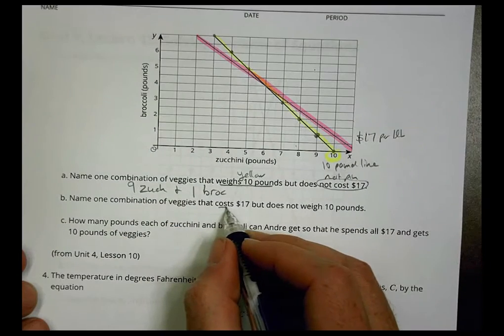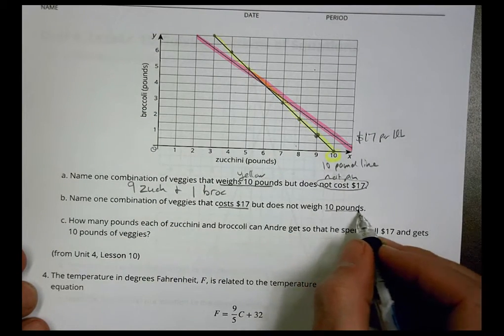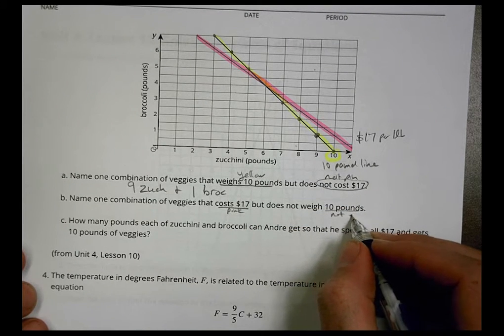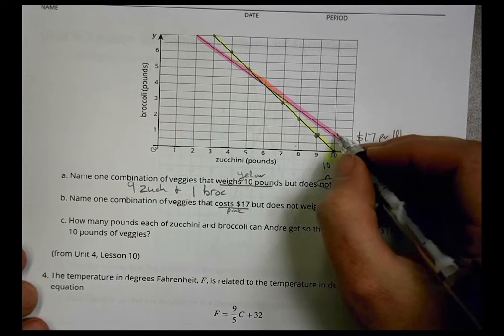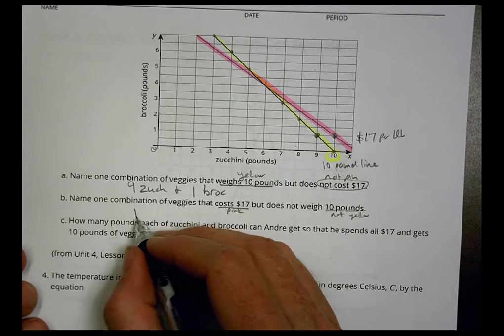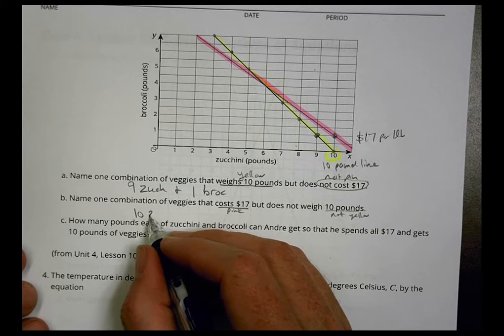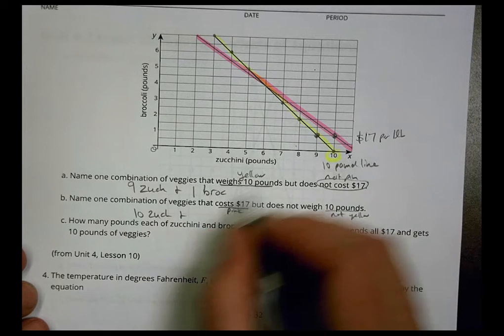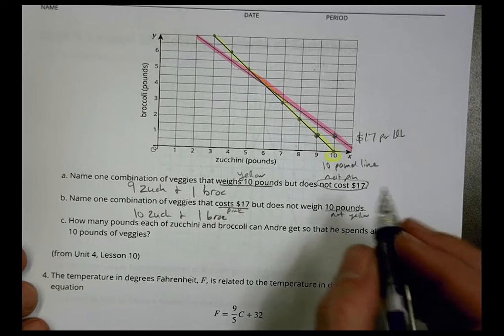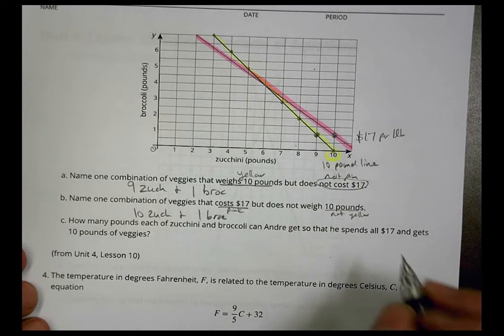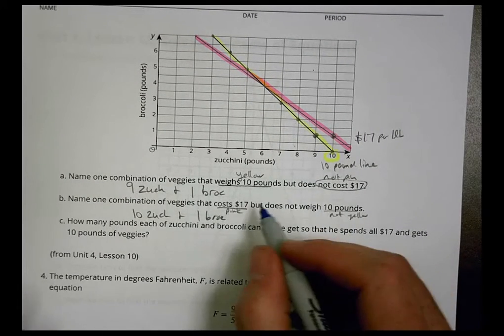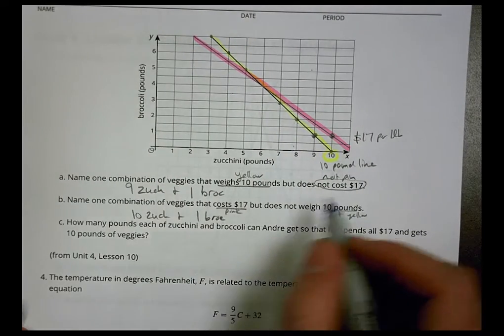A combination of veggies that costs $17 but does not weigh 10 pounds means it's on the pink but not the yellow. We could have 10 pounds of zucchini and one pound of broccoli, and that's going to be 11 pounds, but the cost would be $17. So the cost works but it isn't the right number of pounds. Too many pounds.